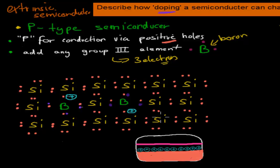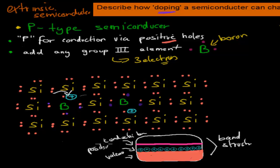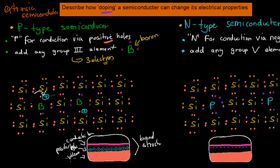The more boron we have, the more positive holes, and these positive holes can help carry current because electrons will be jumping into the holes, keeping current moving. In a p-type semiconductor, by adding a group 3 element we create more positive holes. The band structure of a p-type semiconductor shows the normal valence band and the conduction band, and almost inside the energy gap between them, we have these extra positive holes.